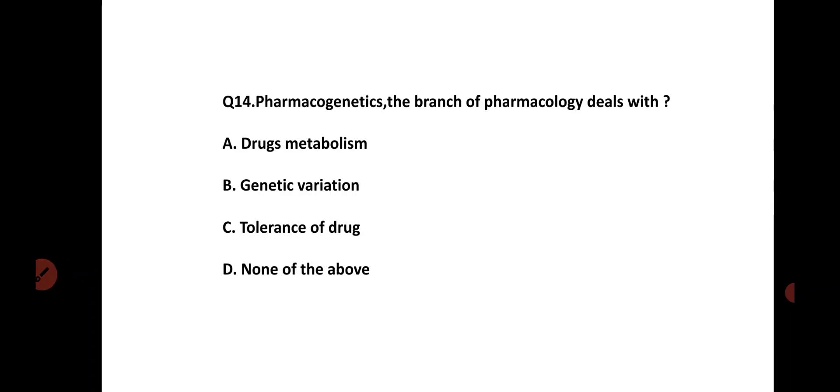The branch of pharmacology that deals with: Option A is drug metabolism, Option B is genetic variation, Option C is tolerance of drug, Option D is none of the above. The correct answer is Option B, genetic variation (pharmacogenetics).